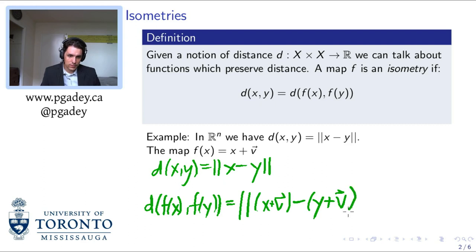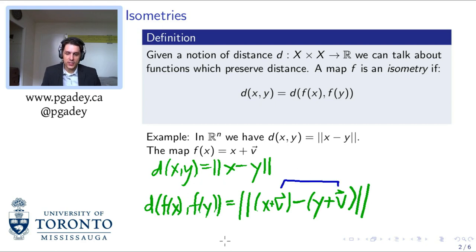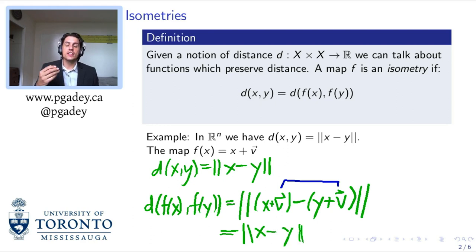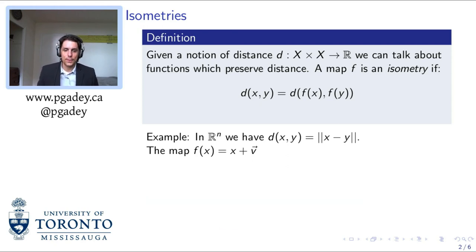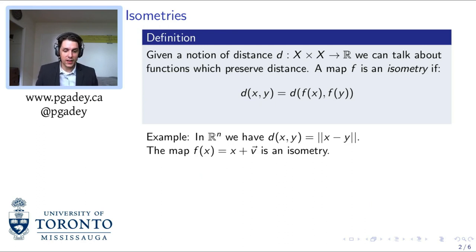Notice that the v's are going to cancel out with that subtraction, so we get x minus y. The distance is preserved when we apply this function because when we shift things uniformly by a vector v, lengths are preserved. This map, x maps to x plus a vector, is an isometry of Euclidean space.